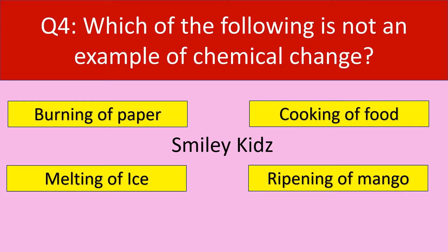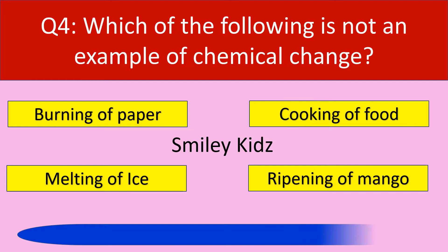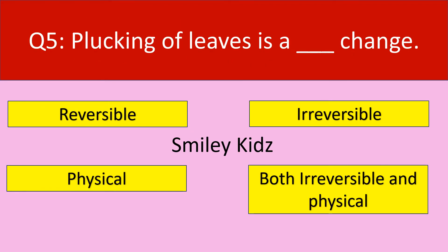Which of the following is not an example of chemical change? Options: burning of paper, cooking of food, melting of ice, ripening of mango. Your time starts now. Your time is up — melting of ice is not an example of chemical change. It is an example of physical change.